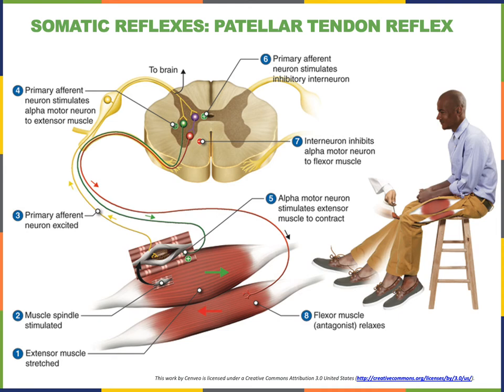The receptor is the muscle spindle stretch receptor inside the extensor muscle known as the quadriceps femoris. The afferent pathway is the axons of the sensory neurons relaying information from the muscle spindle stretch receptor through the femoral nerve and spinal nerve roots L2 through L4 into the spinal cord. The integration center is in the spinal cord, where the afferent neurons synapse directly with efferent neurons.